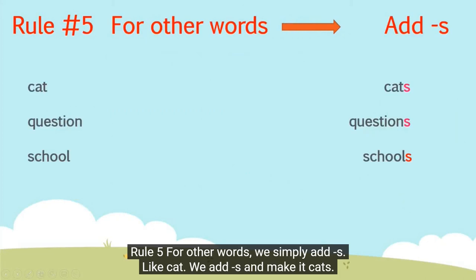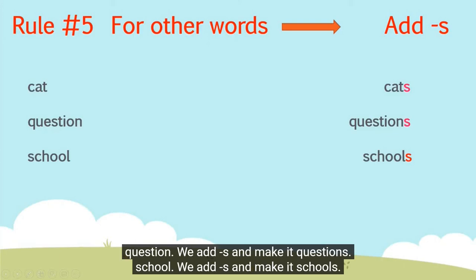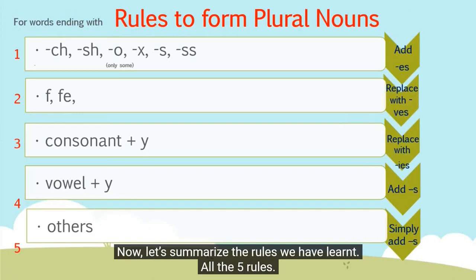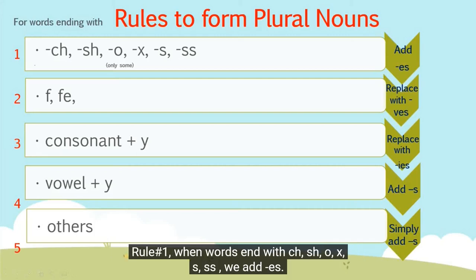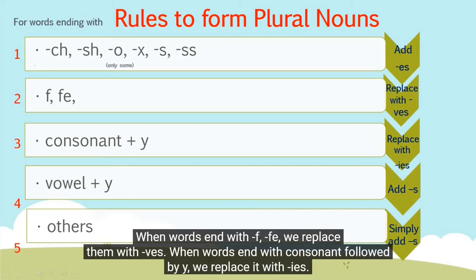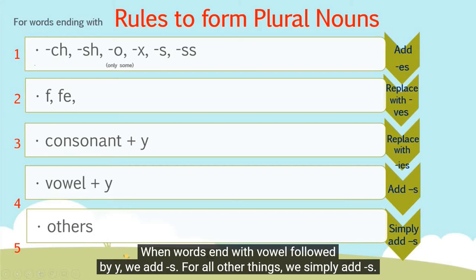Rule five: for other words, we simply add S. Like cat — we add S and make it cats. Question — we add S and make it questions. School — we add S and make it schools. Now let's summarize all five rules: end with CH, SH, O, X, S, SS — add ES. End with F or FE — replace with VES. End with consonant plus Y — replace with IES. End with vowel plus Y — add S. For all other words, simply add S.